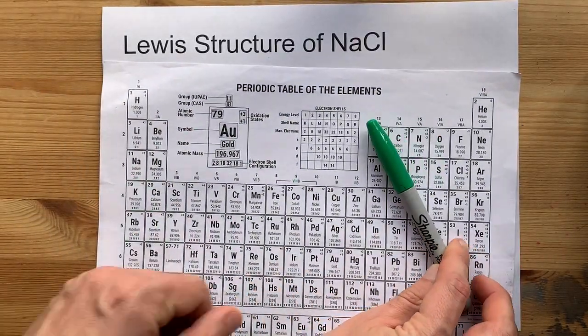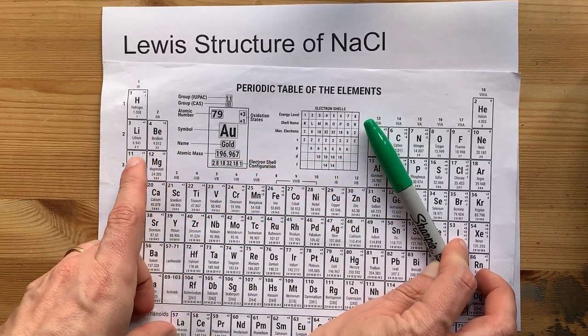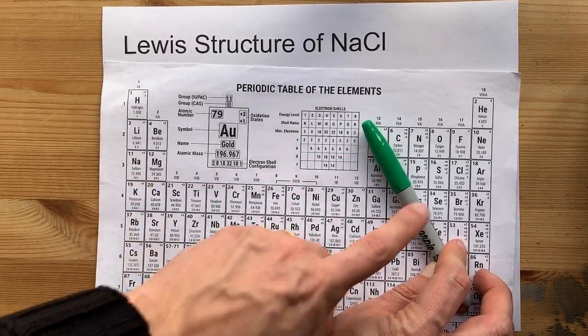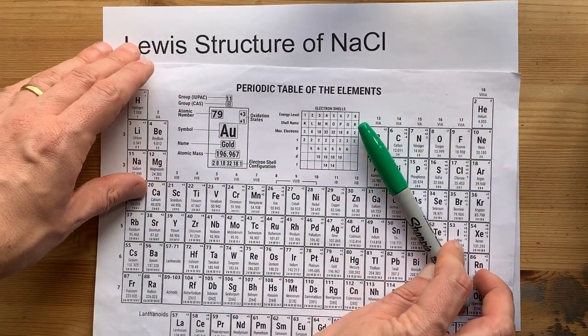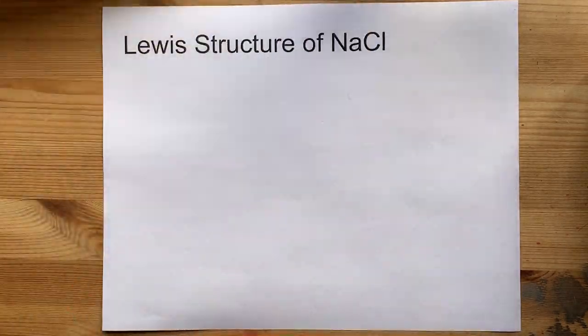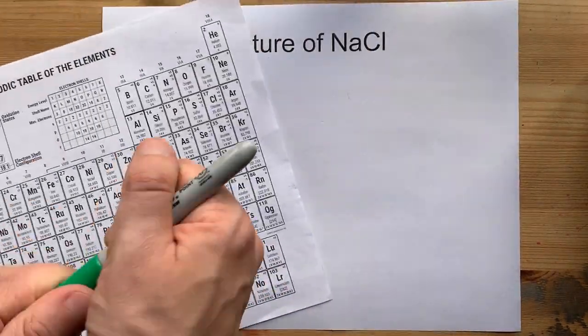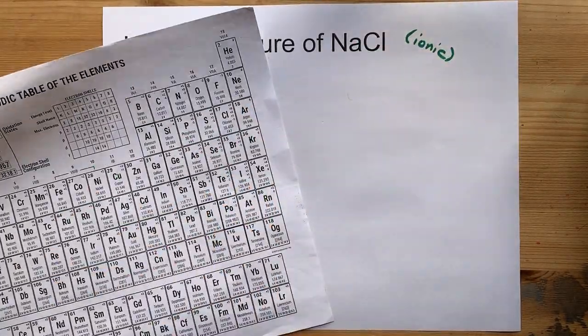Sodium is a metal. It comes from the left-hand side of the staircase, and so it's going to give up its electrons. Chlorine is a non-metal. It will accept electrons, and I know it's a non-metal because it comes from the right-hand side of the staircase. So it's going to form an ionic compound because it's a metal and a non-metal getting together.